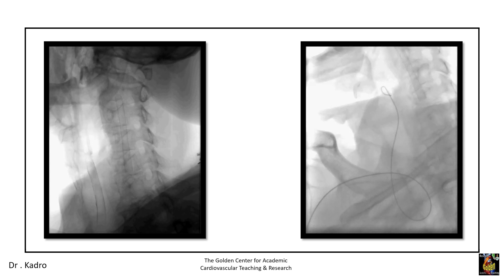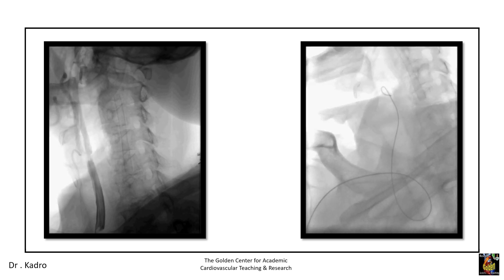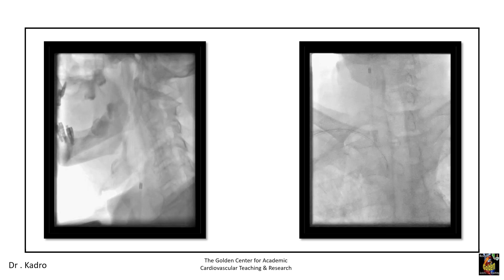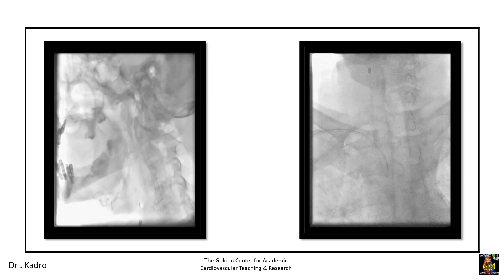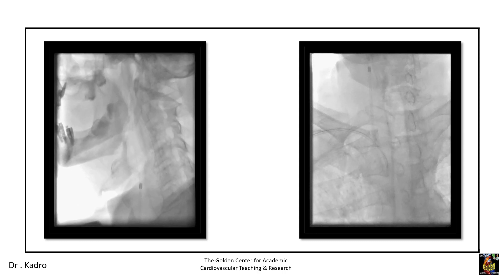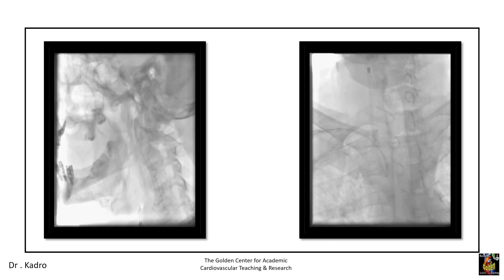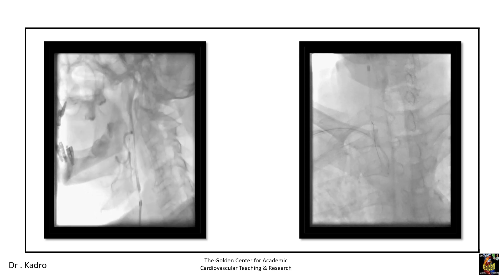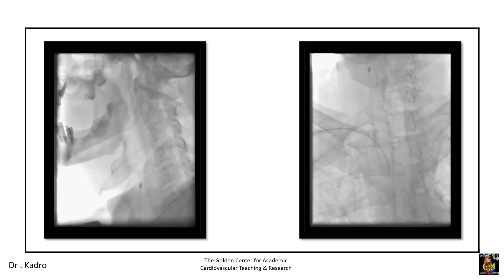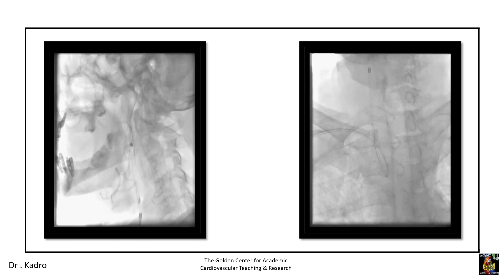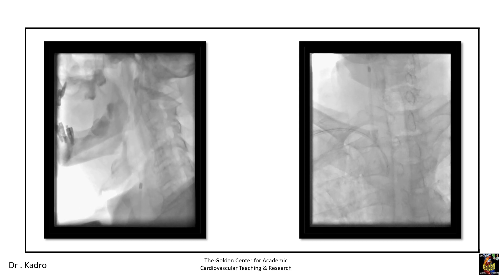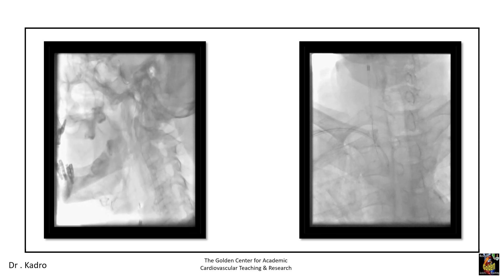A stiff wire was placed in the right common carotid after making a loop to engage the carotid. A six French sheath was then placed in the right common carotid. This is the angiogram showing the lesion, and this is the fluoroscopic image showing the position of the sheath with the loop.